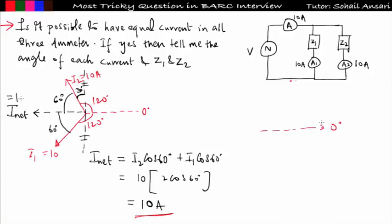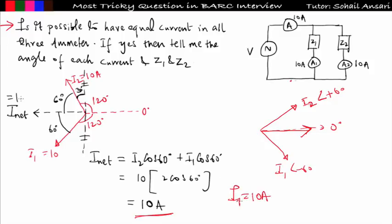Consider the reference at 0 degrees. I2 will be at an angle of plus 60 and I1 will be at an angle of minus 60. The net current will be along the reference, and the net current I_net will be equal to 10 ampere — same procedure as explained in the previous lecture. So for 60 degree leading and 60 degree lagging, this type of connection is possible. But for plus/minus 120 degrees, it is not possible. The interviewer is trying to play with your mind by saying minus 120 and plus 120.